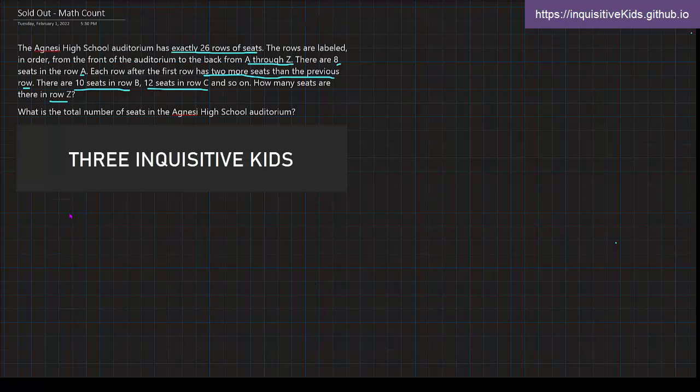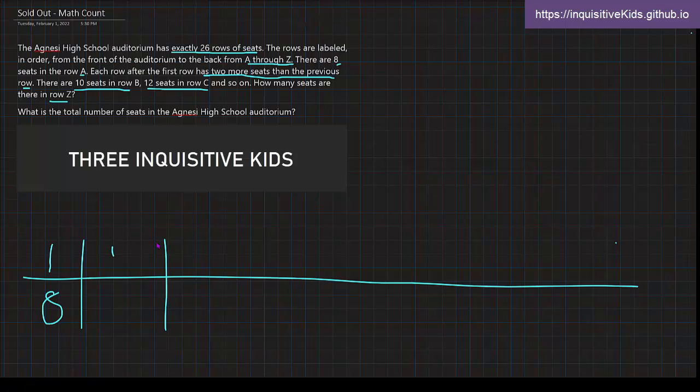So, we know that for row A, really, if it's the first row, it's just kind of, I'm going to label it as 1. This is, you know, math, so it's going to be easier if I do it with 1 to 26. So, for row A, there are 8 seats. Now, I'm going to do row B. In row B, there are 10 seats. In row C, there are 12 seats.